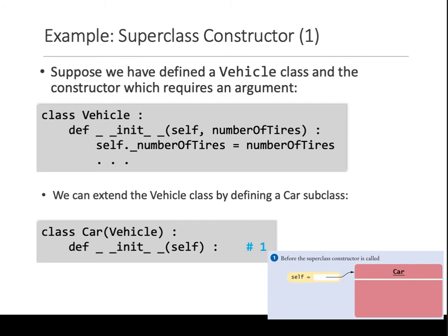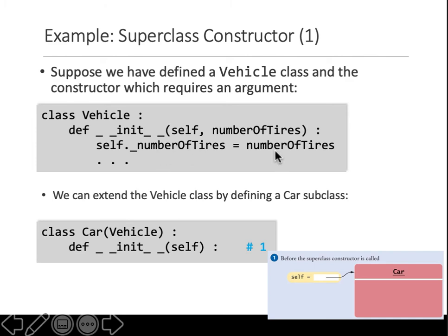Going back to our vehicle example — in the vehicle there is a constructor that takes an input called numberOfTires and sets the variable numberOfTires to whatever is being passed.